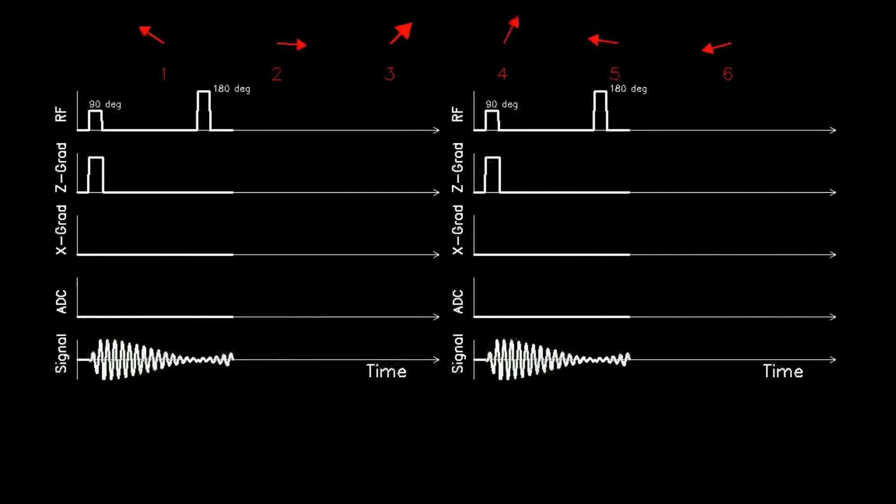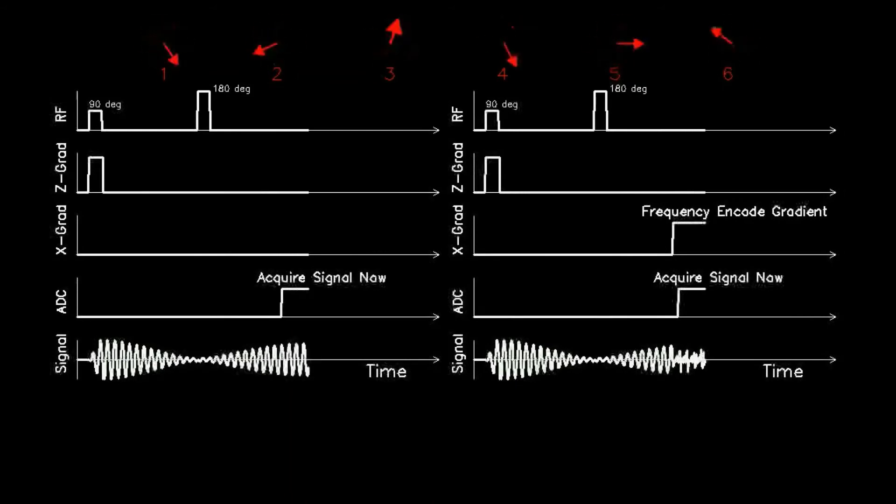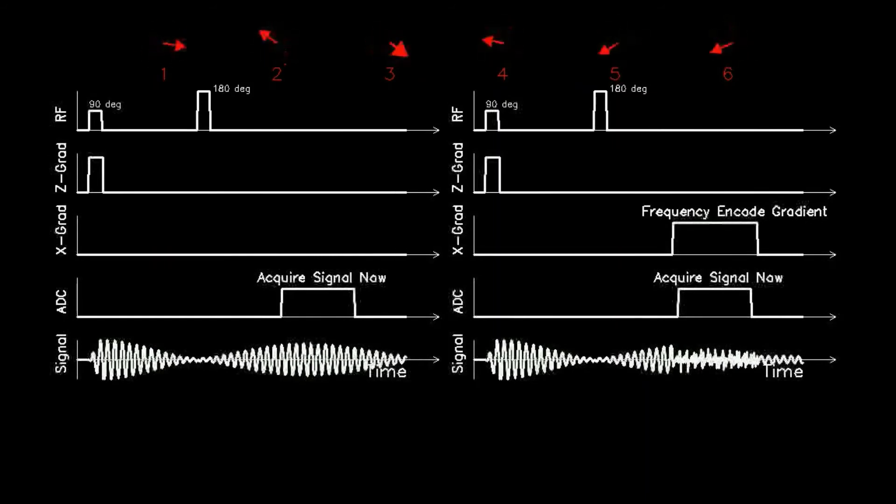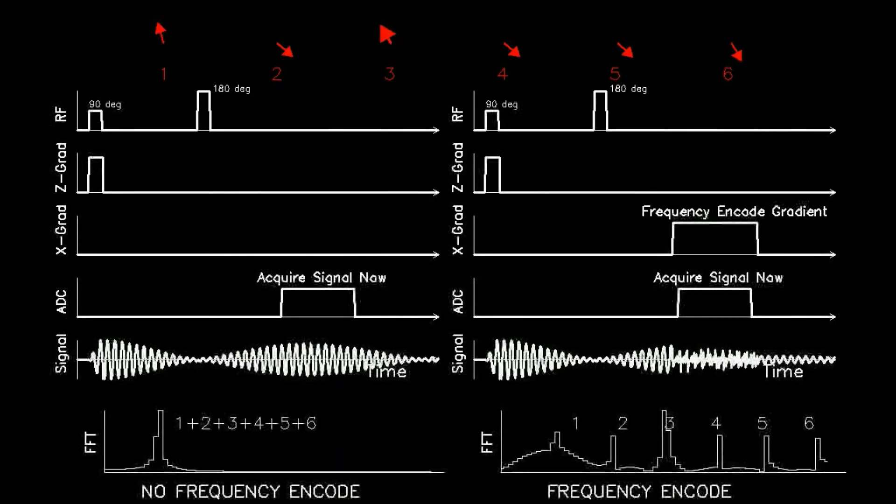In effect, the X axis location of each spin becomes encoded by its corresponding frequency. Notice that the frequency encoding gradient is applied during formation of the echo and coincides with acquisition of the signal.